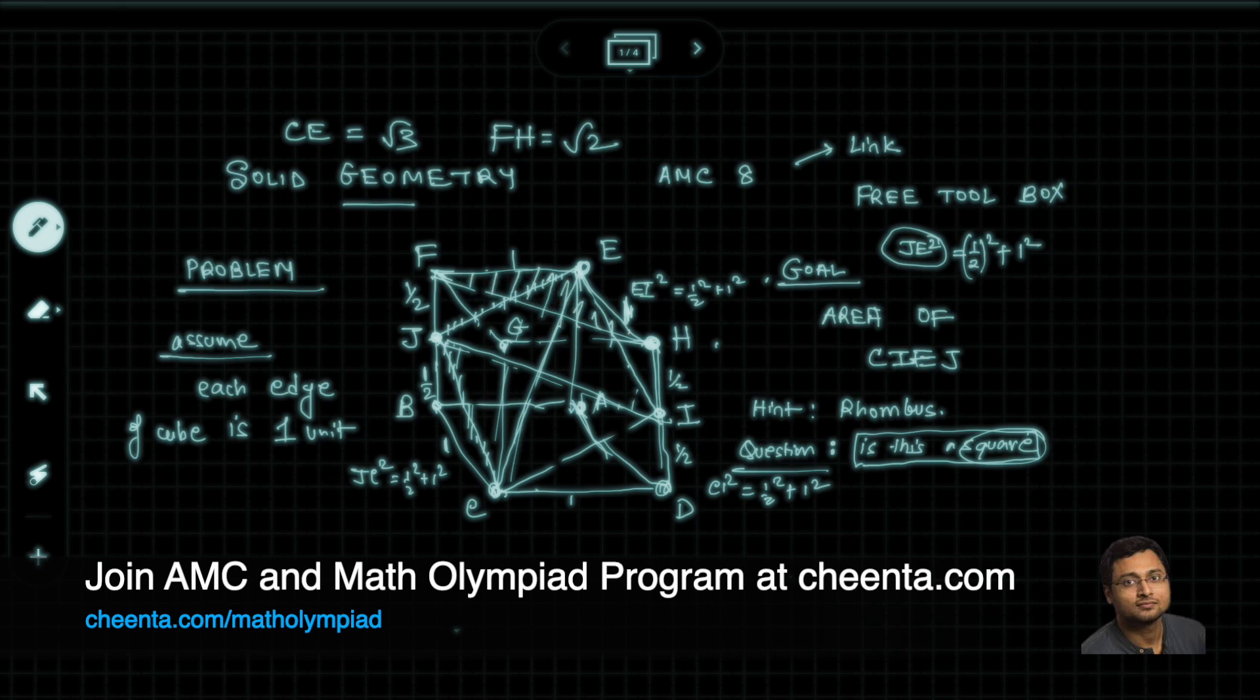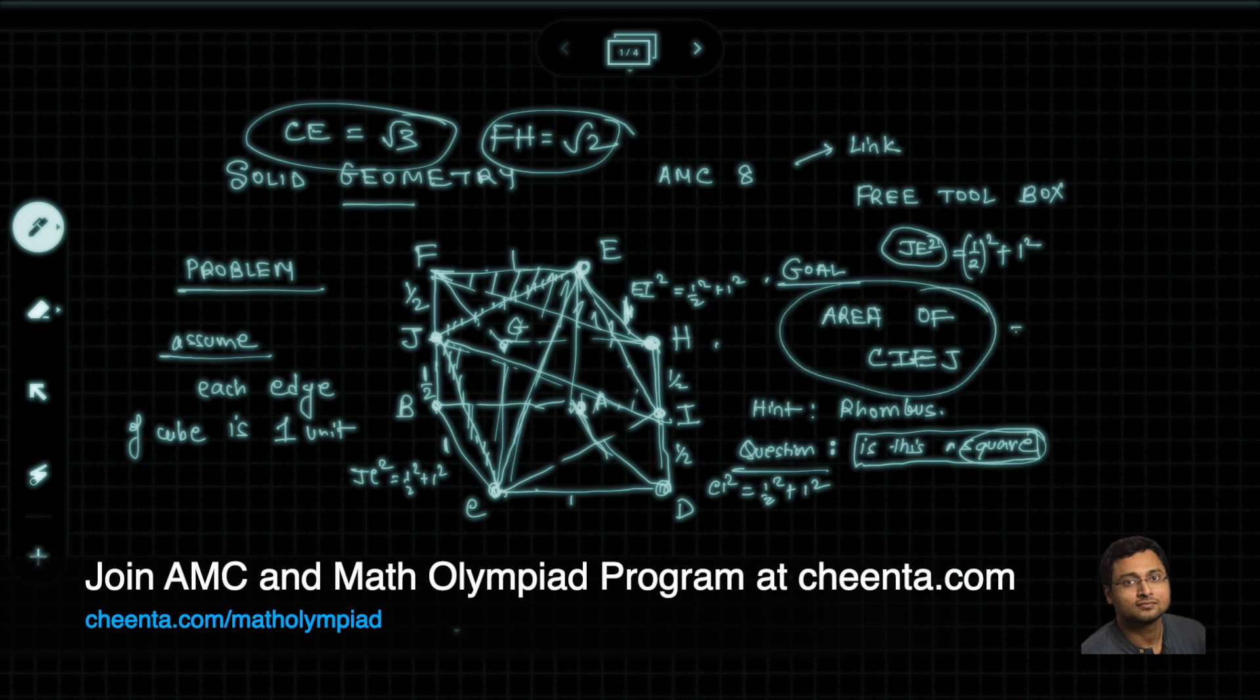So we know what is CE, we know what is FH, so we can directly find out the area of CIEJ, which is half times square root of three times square root of two. So that's your final answer.